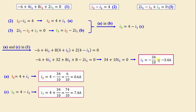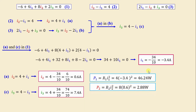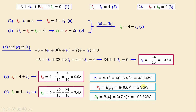We have now found I1, I2, and I3. Let's calculate the dissipated power in each resistor. The dissipated power in R1 is P1 equals R1 times I1 squared, which gives 46.24 watts. The dissipated power in R2 equals R2 times I2 squared, giving 2.88 watts. The dissipated power in R3 equals R3 times I3 squared, giving 109.52 watts. After completing the calculations, we conduct a simulation using SPICE to verify our results.